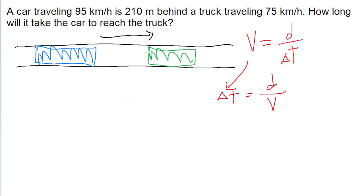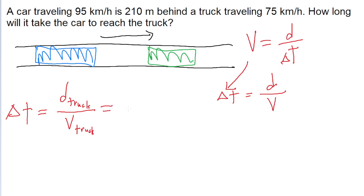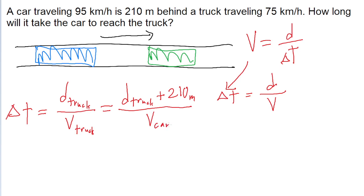We can use this D over V formula on both the truck and the car to find a relationship between the variables we have and the ones we don't. Some delta t — whatever the time is we're trying to find — for the truck equals the distance the truck travels divided by the average speed of the truck. This also equals D over V for the car, which is however far the truck travels plus the 210 meters it needs to close, all divided by the average speed of the car.